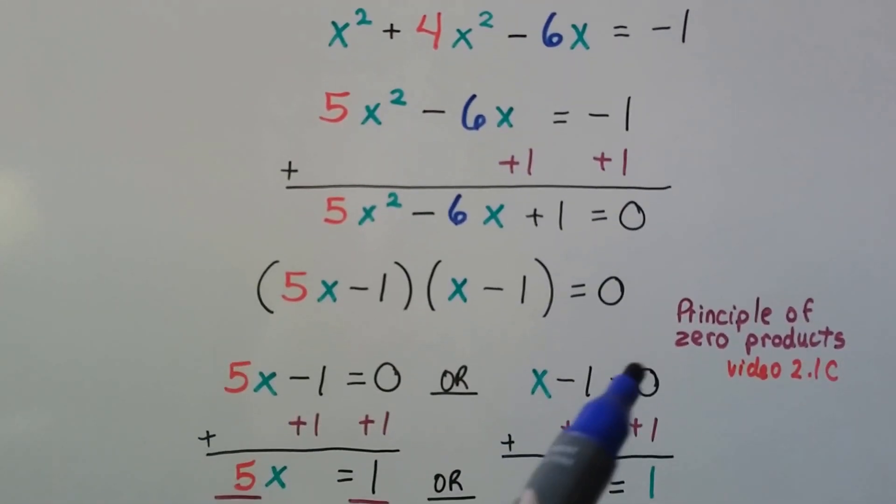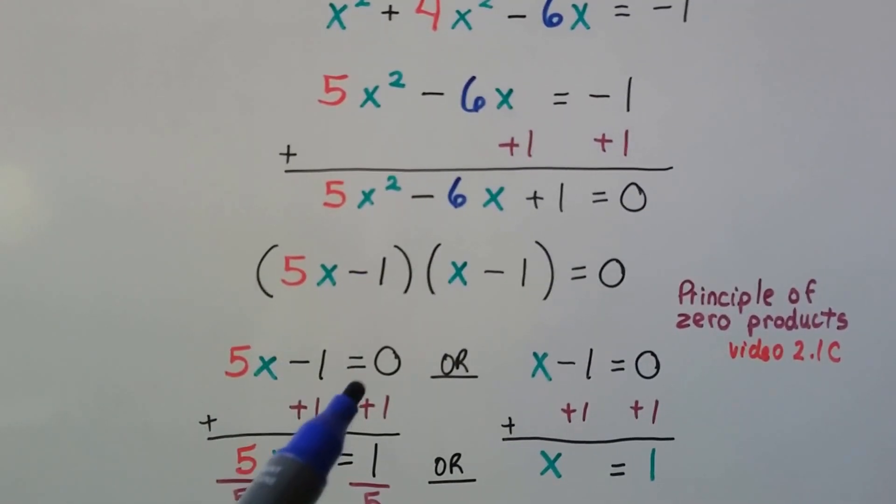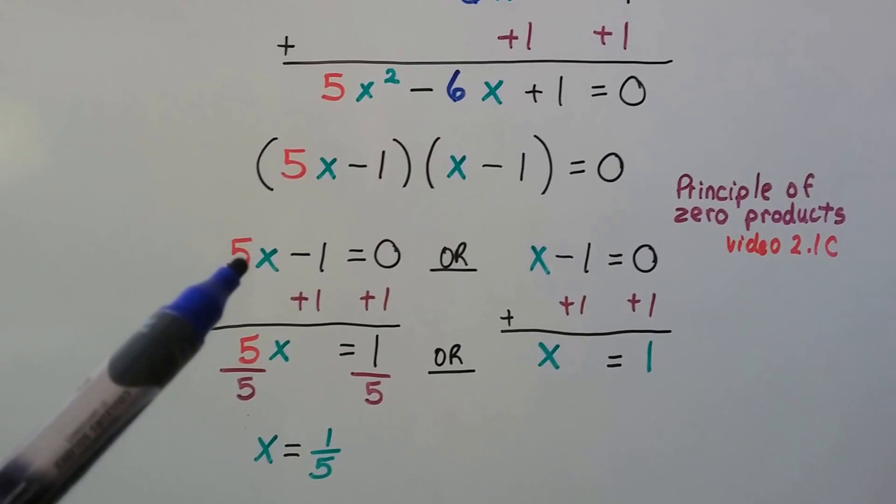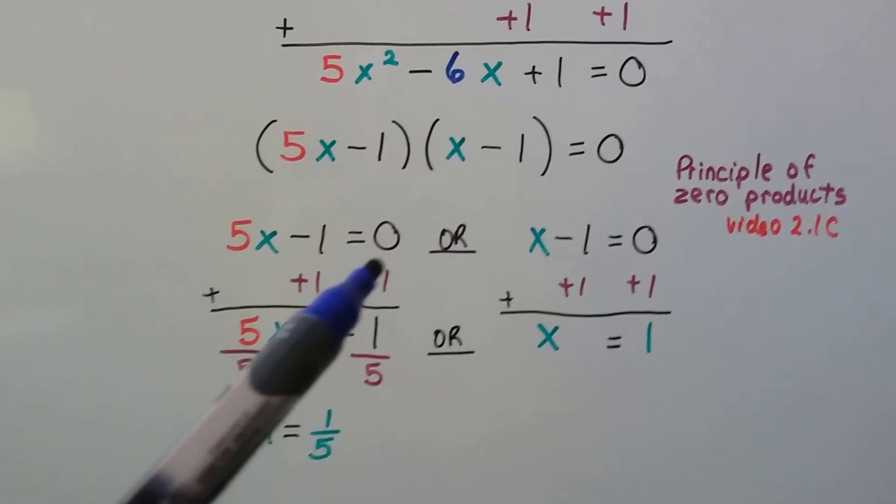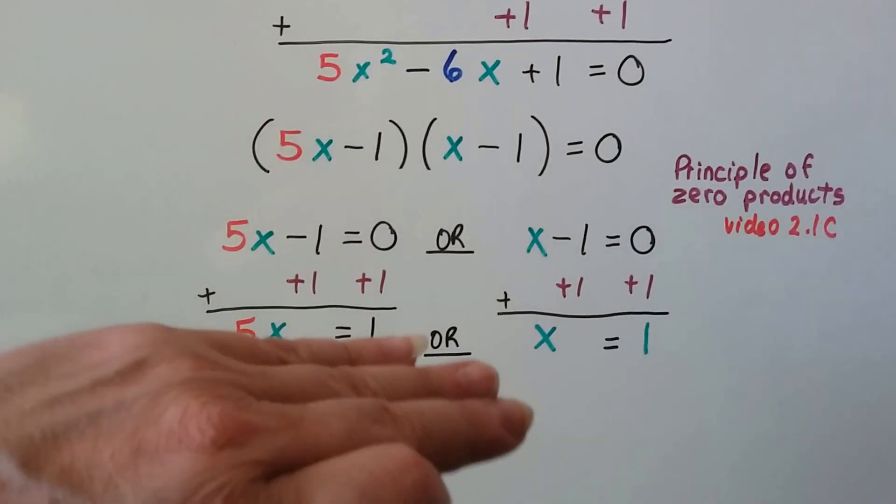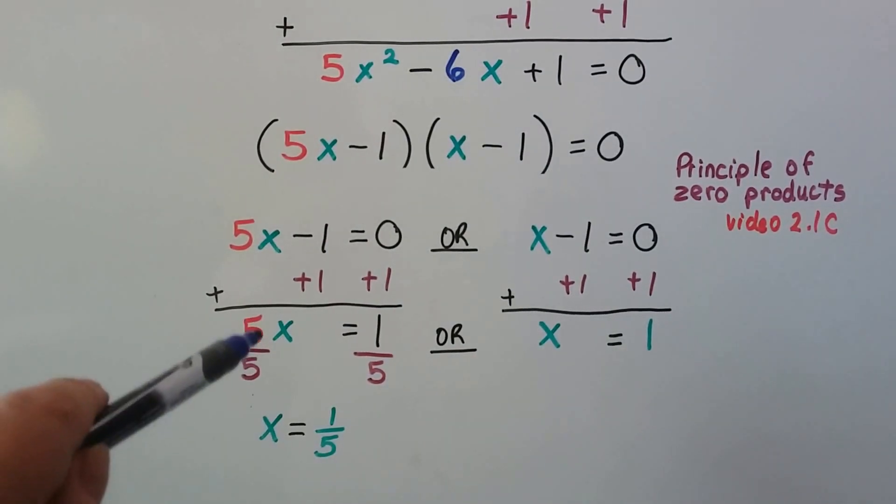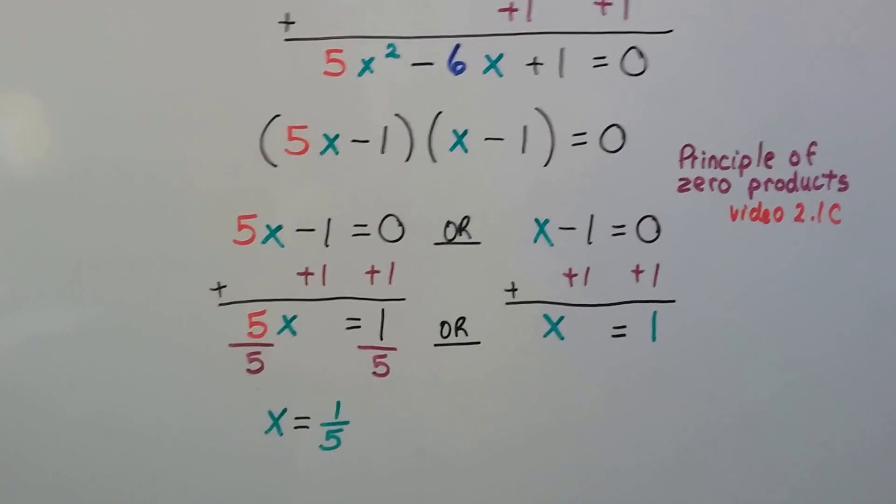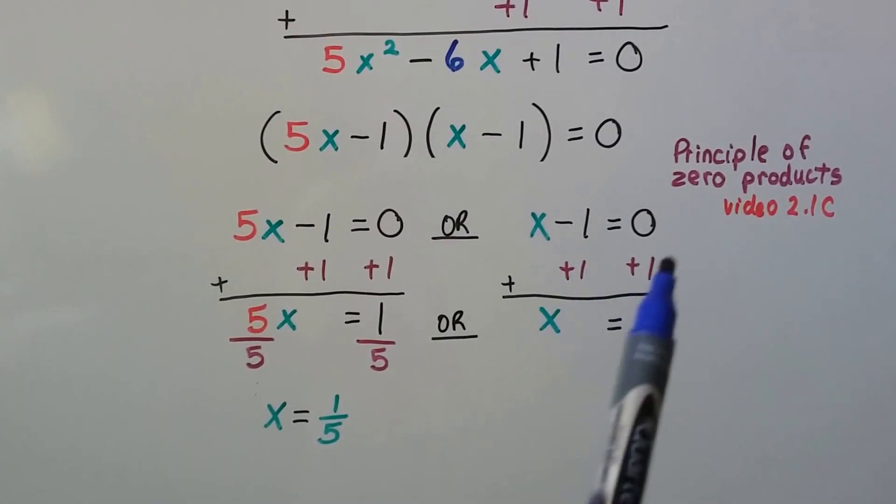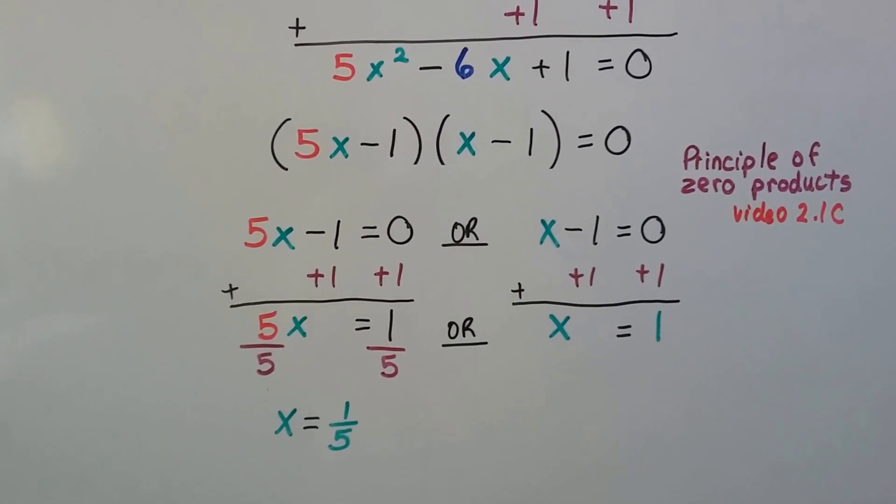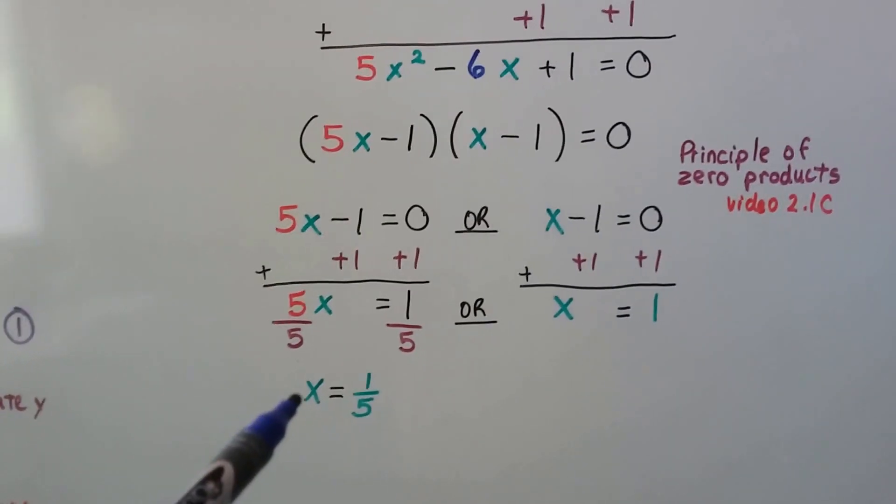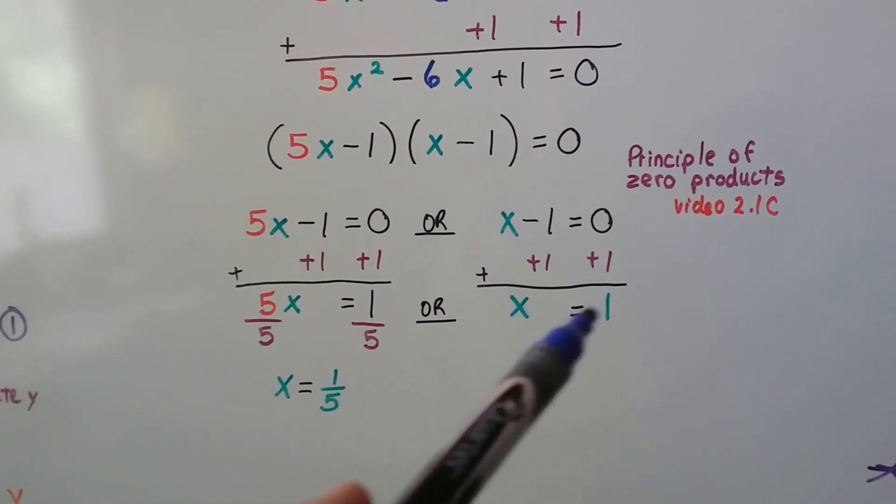We can set each one to equal 0. 5x - 1 = 0 or x - 1 = 0. We can isolate x by adding 1 to each side of this equation, and we get 5x = 1. We divide each side by this coefficient 5, and we get x = 1/5. Over here, we add 1 to each side, and we get x = 1.